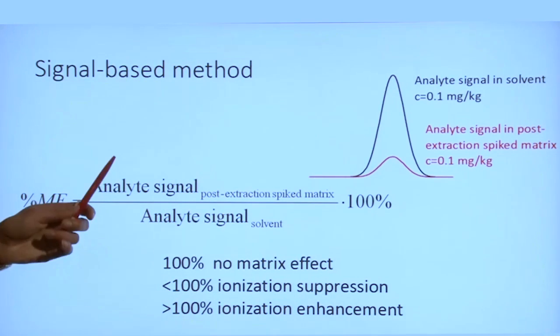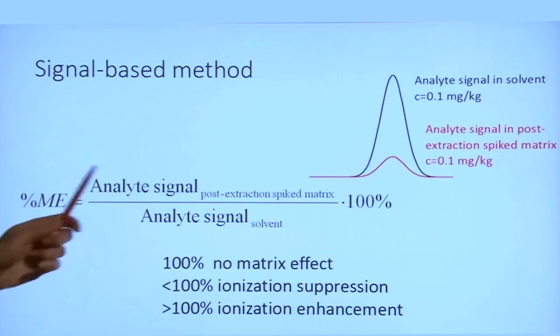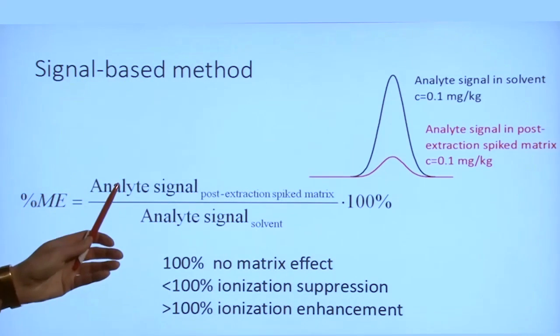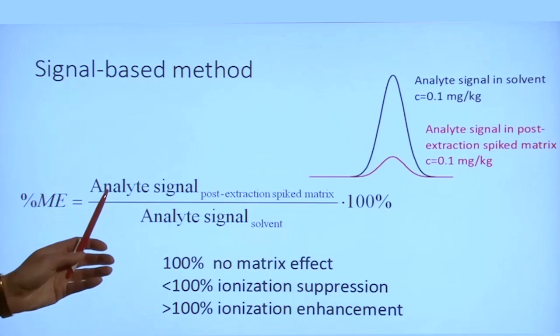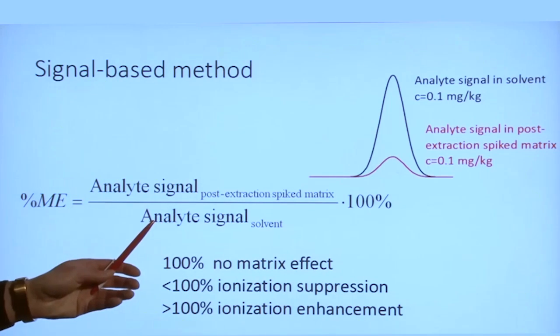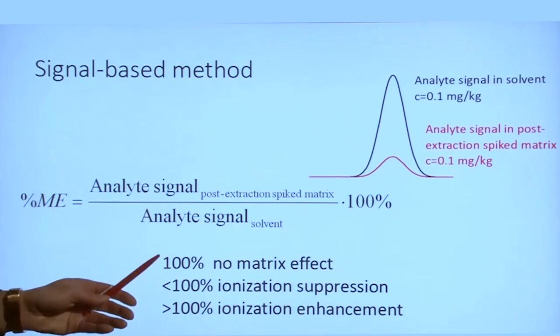And the ratio of these signals can be used to evaluate matrix effect. If matrix components do not influence the ionization of our analyte, then the peak areas for the spiked extract and the standard solution would be identical and the matrix effect value would be 100%.